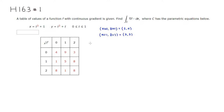So if you evaluate this integral using the Fundamental Theorem, you can see that the integral of gradient of f dot dr is going to be f at the ending point, which is (2, 2), minus f at (1, 0).